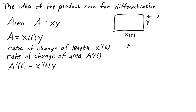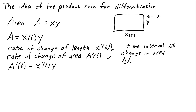How much does the area change in a tiny time interval delta t? If we imagine that these rates of change are fixed during this time interval — the time interval is small — then to calculate how much the area changes, we just multiply the rate of change by delta t. So the change in area, delta a, would just be the rate of change, a prime of t, times the interval delta t. And given that a prime of t is x prime of t times y, this equals x prime of t times y times delta t.